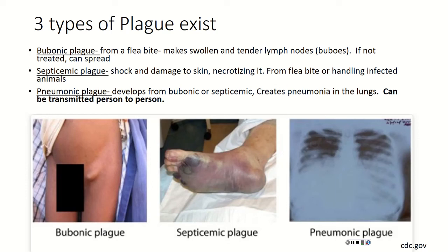But if it goes untreated — for example in the Middle Ages, not nowadays — it could move into different types of plague. One is septicemic plague. Septic shock means the bacteria has now gotten into the blood supply and is causing damage to different parts of the body. We can see that with a patient's leg here — on the foot you can see black spots. That's necrotizing tissue — tissue dying because of the overall infection. Septicemic plague can spread from bubonic plague, or directly through a flea bite or handling an infected animal.